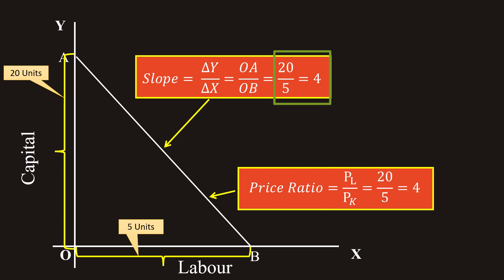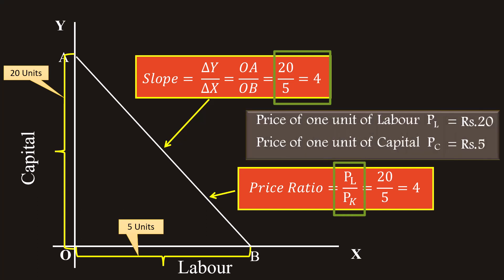Again, slope of the price line is given by the price ratio, PL by PK. Price of one unit of labor is 20 rupees. Price of one unit of capital is 5 rupees. Then, 20 divided by 5 is 4. 4 is the price ratio.